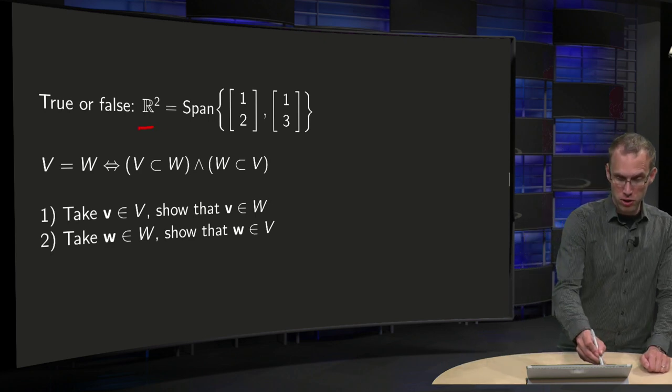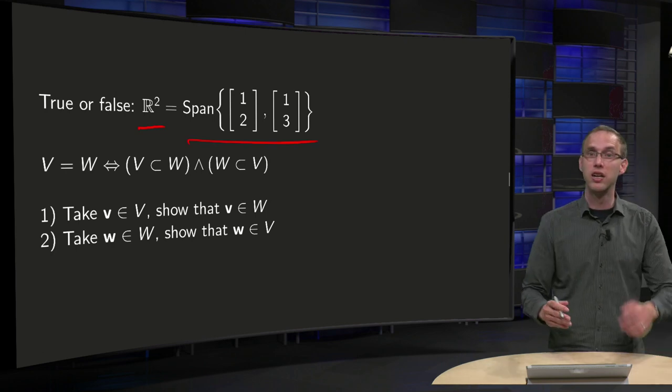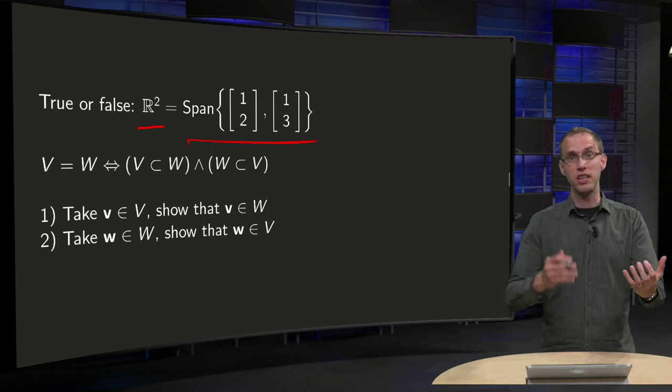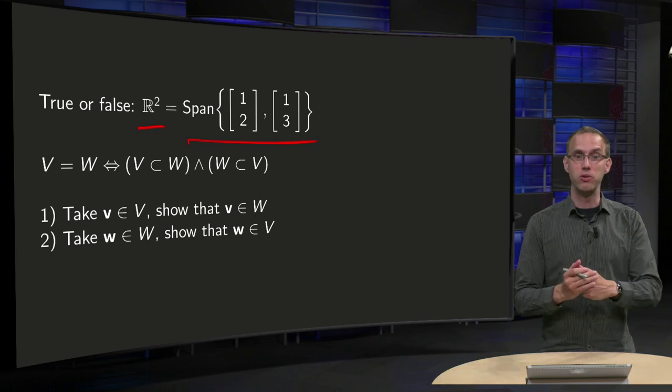So I want to show that R² equals the span over here. I want to show that one set is equal to the other set. We learned how to do this.